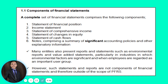A complete set of financial statements includes: number one, the statement of financial position, which reports assets, liabilities, and owner's equity; number two, the income statement, reporting net income or loss for a period; and number three, the statement of comprehensive income, which includes the income statement together with other components of comprehensive income such as gains or losses. Number four is the statement of changes in equity.